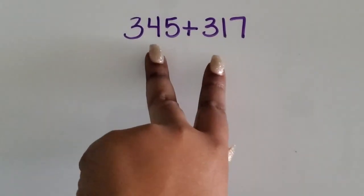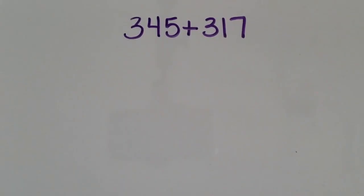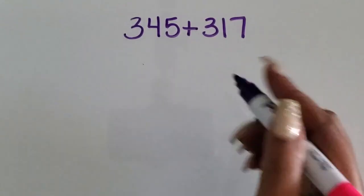We are going to add two three-digit numbers using the expanded form. I'm going to show the value of each of the digits based on their place value.